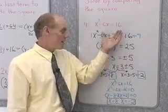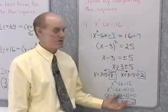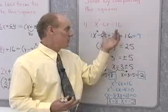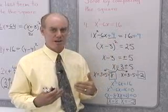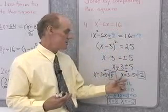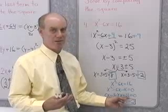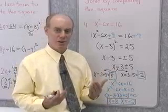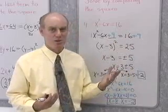Now, you might ask: why go to all this trouble of completing the square when I could have just factored this equation and got these solutions anyway? The point is this: not all quadratic equations factor. This completing the square method allows you to solve any quadratic equation, whether it's factorable or not. In this case, we get two nice solutions — 8 and negative 2 — which tells us the original equation was, in fact, factorable. But we don't always know that. Some equations are factorable, some are not. If they're not factorable, we need another method, and this completing the square method always works.